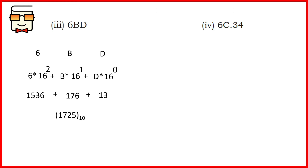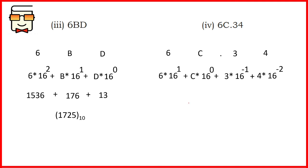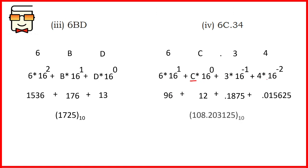The fourth part asks you to convert 60.C34, which has both a fractional and a non-fractional part. Multiply by the correct powers of 16, just as we did for octal numbers. C is replaced by 12. After multiplying and adding the values, the final answer is 108.203125 in decimal. That's all for today's lecture.